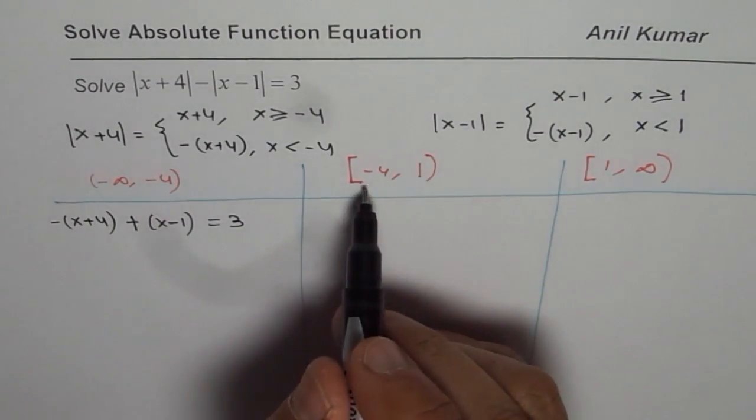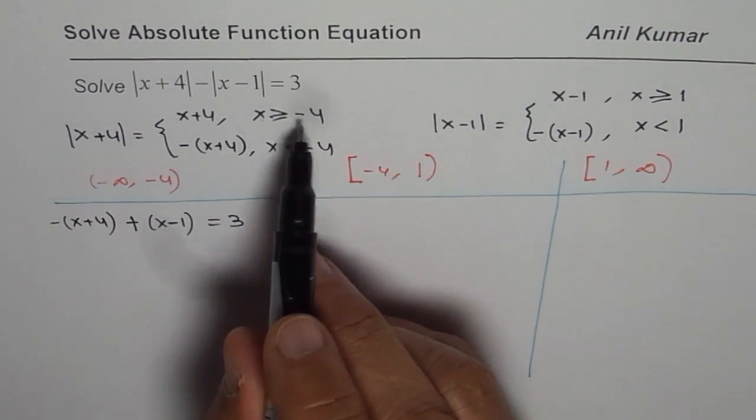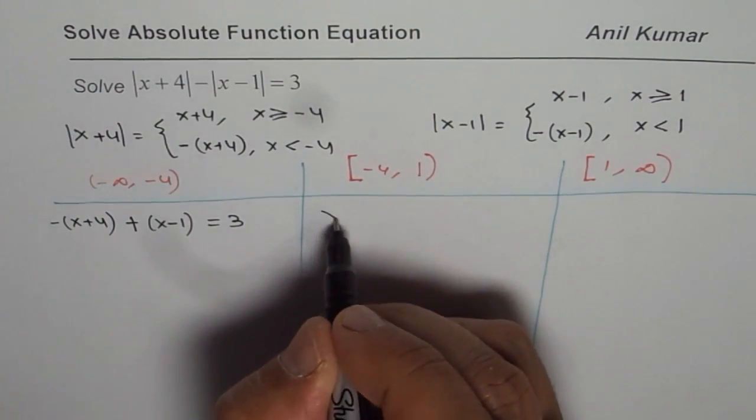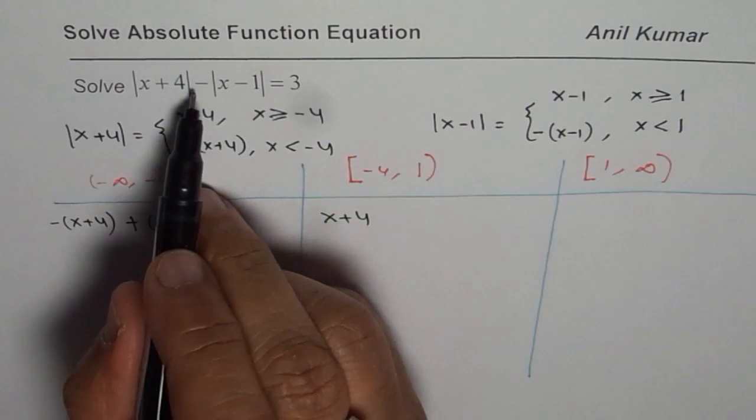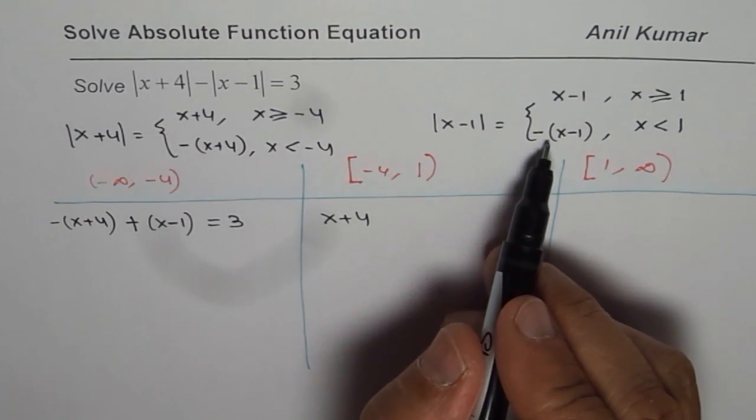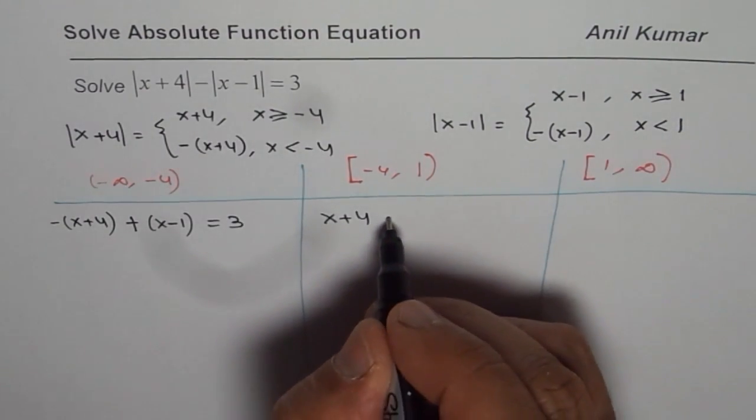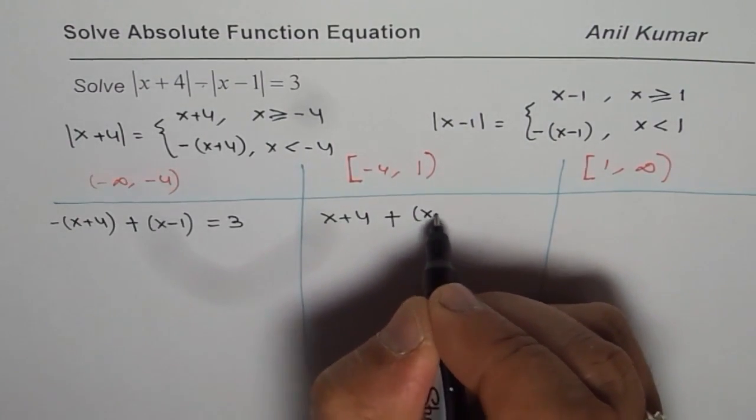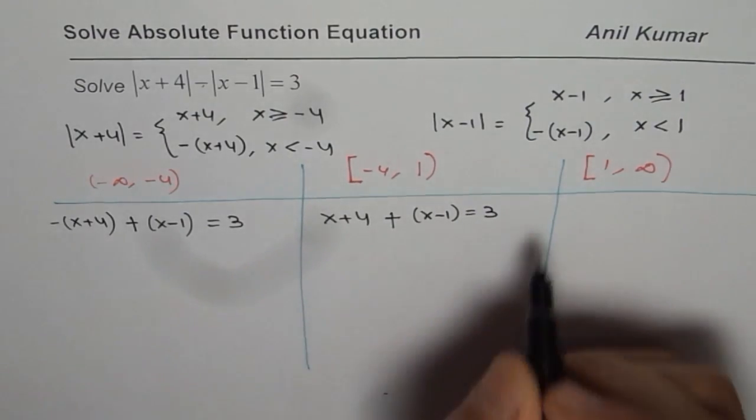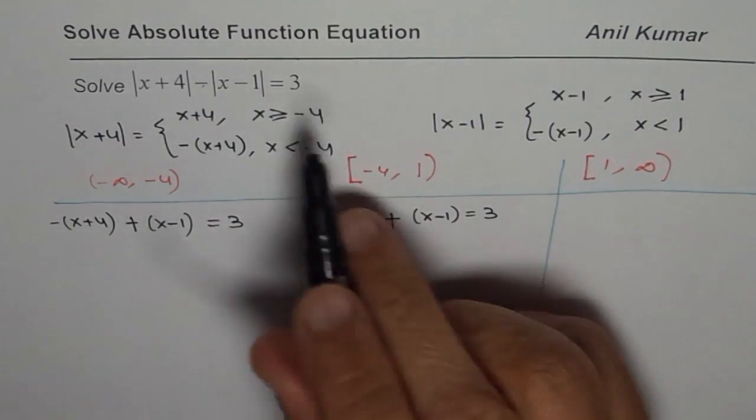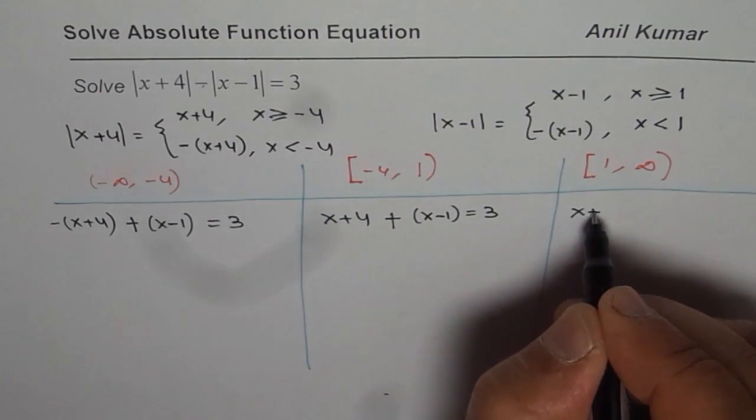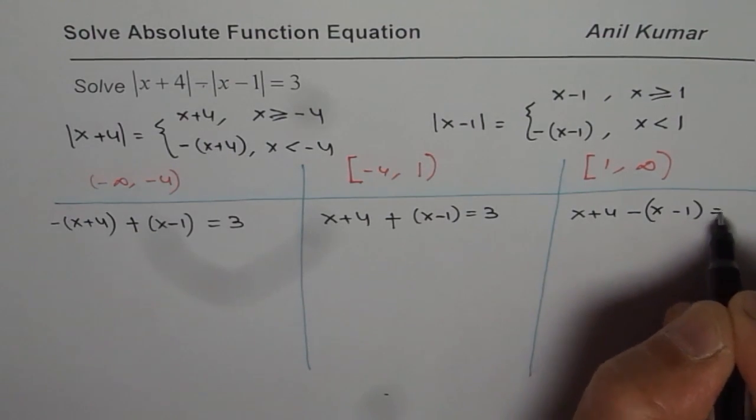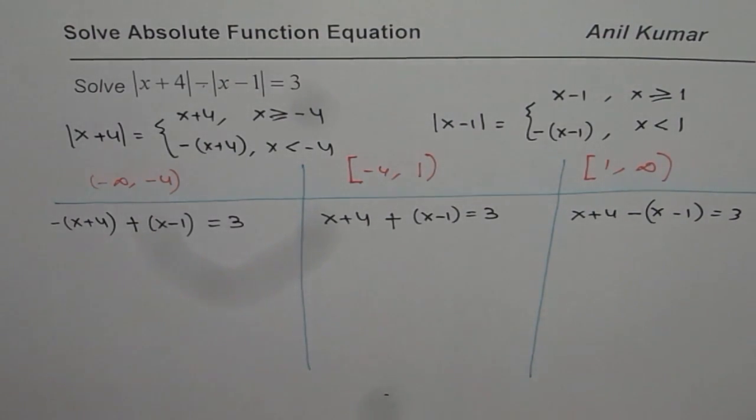In the interval where x ≥ -4 and x < 1, the first absolute function is positive (x+4), but the second is negative, giving x+4 + (x-1) = 3. In the third interval, both are positive: x+4 - (x-1) = 3. You need to solve these three equations.